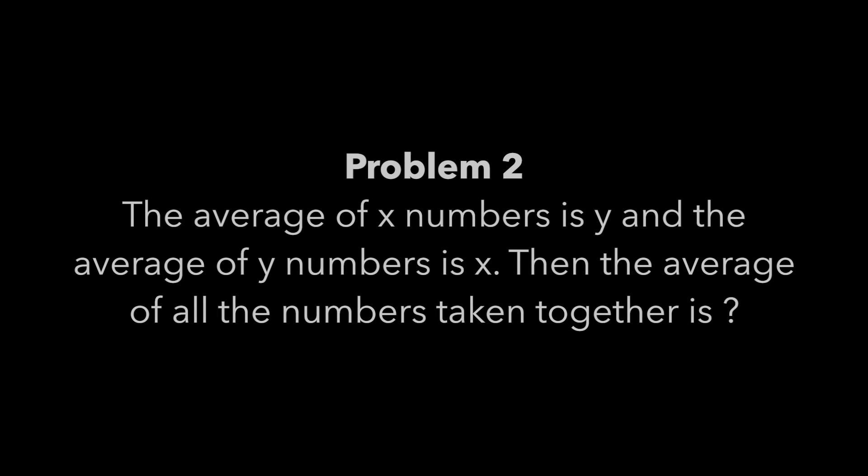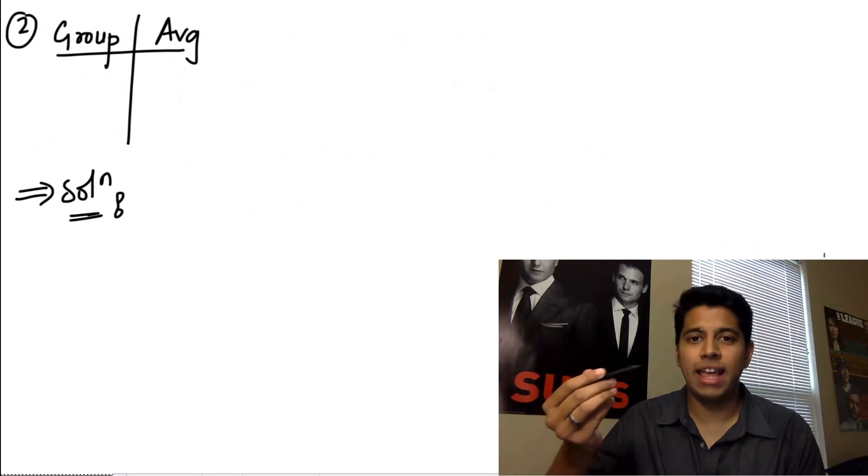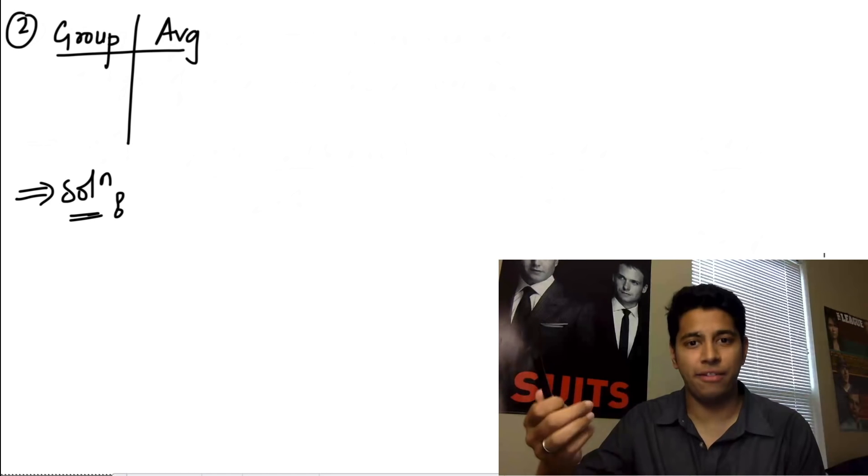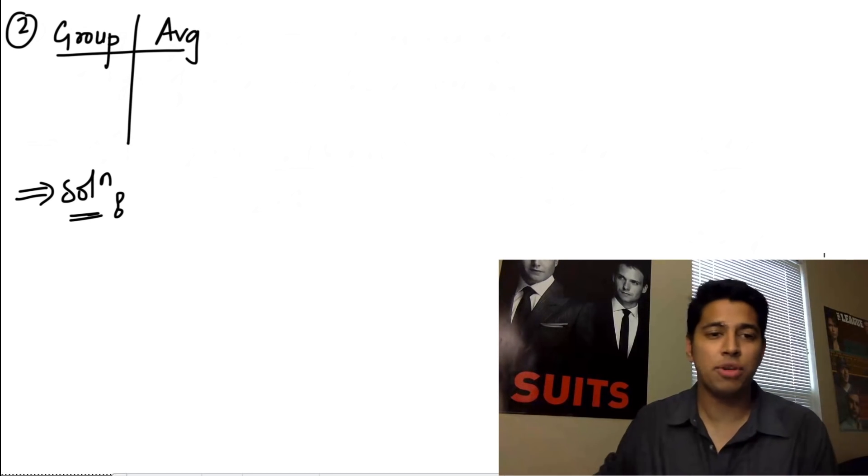Let's go into problem number 2. Now for the second problem, they've given you that the average of x numbers is y and the average of y numbers is x. What is the average? This seems like it's totally different from all the problems that we've done before and it seems tougher, but in fact, it's the easiest problem that we've done till now. Let me show you how.